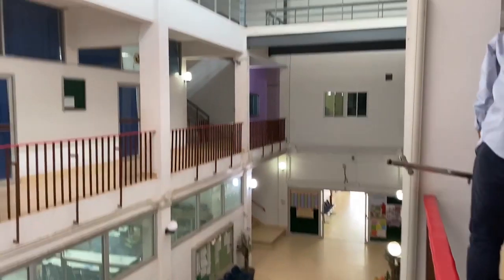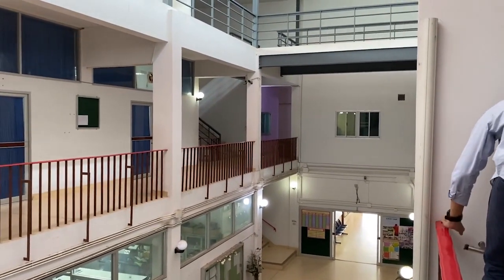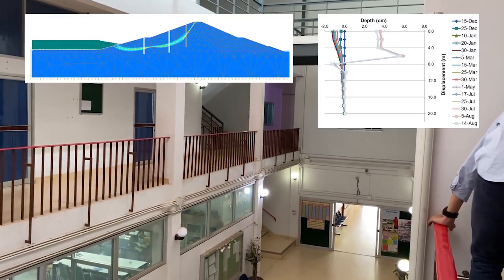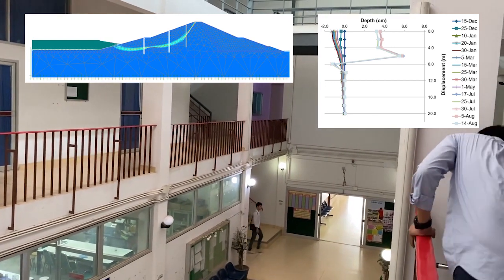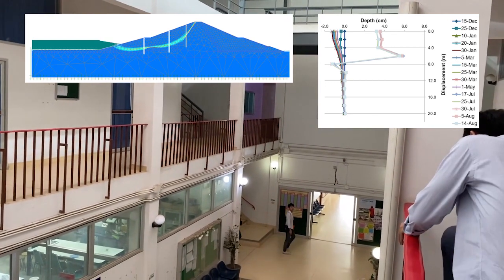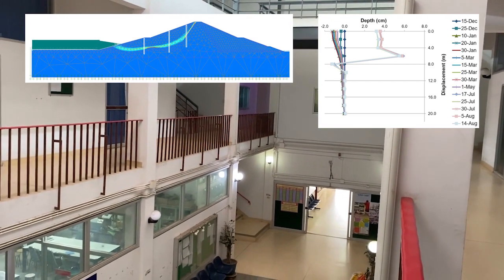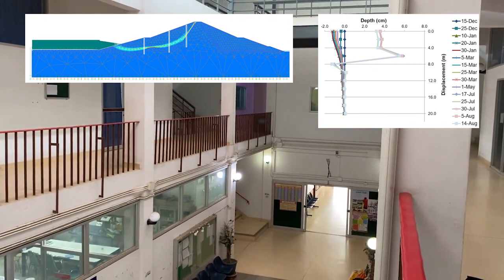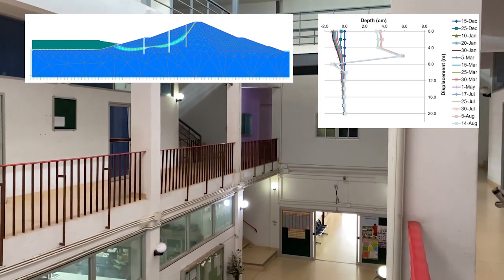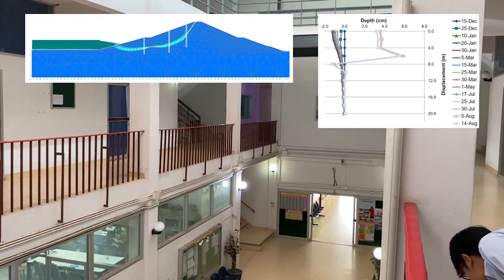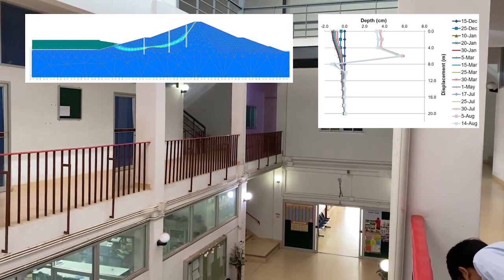Now I am going to show you the practical application of this test — how it can be used and when it is used. At the site, we install the inclinometer at the slope to observe its movement. The example of the slope and inclinometer is shown at the top of this video. We observe the data at regular intervals, and when the slope moves, a difference in recording is observed with the help of data recorded via the data logger.